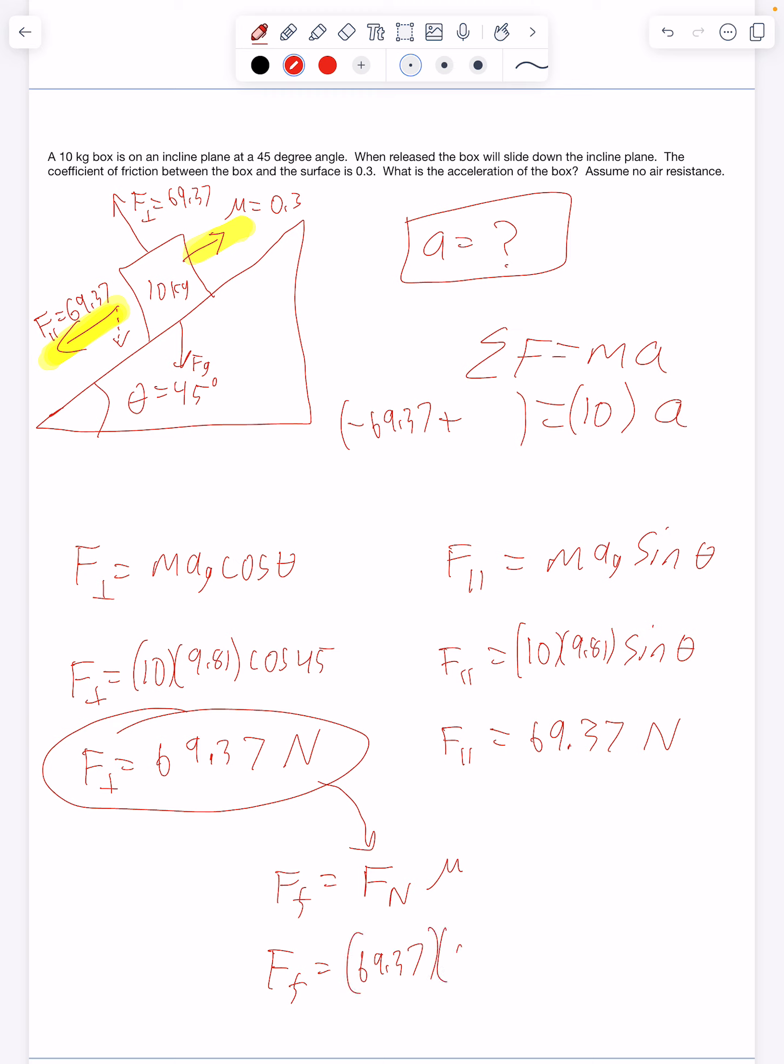So I want to multiply that times 0.3. So we have 69.37 times 0.3. We get 20.81. So that's the friction force. That's the force here.